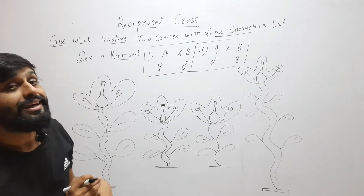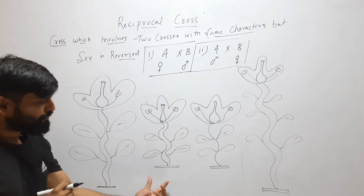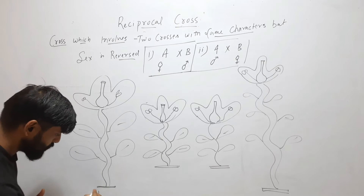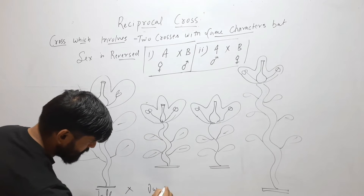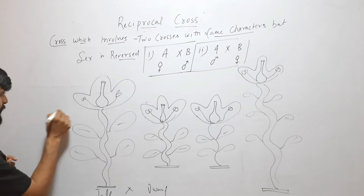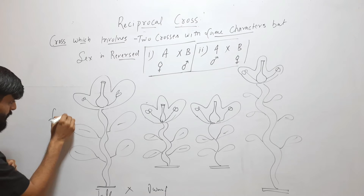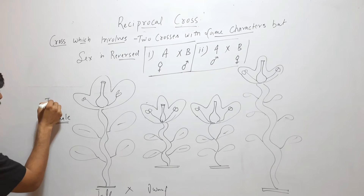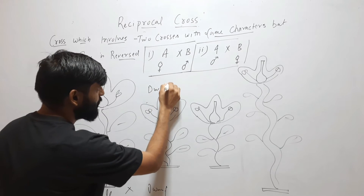Let's understand this with another example. Suppose we are crossing between two plants. Here I am taking one tall plant and one dwarf plant. So here I am taking the female part of the tall plant — using tall as female and dwarf as male.